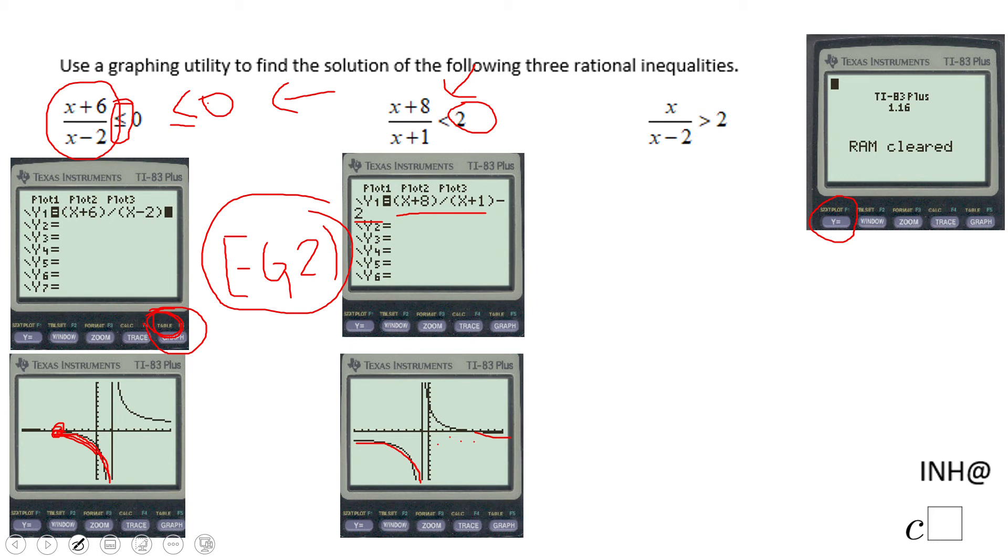Sometimes if you have just the picture it's hard to see, so don't forget about the table. You can look in the table and see when the values of this function are less than zero. You should have two intervals like this.